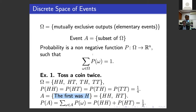There is a function defined on the set omega called probability, which sums to one. It's reasonable to assume each elementary event has equal probability of one-fourth. The sum over four events is exactly one. The probability of a more complicated event is the sum over its elementary events — in this case, P(HH) + P(HT) = one-half.